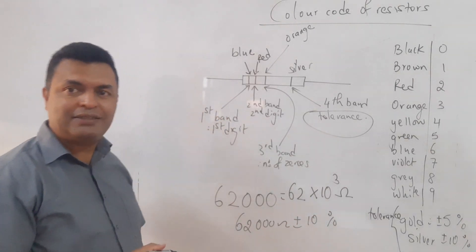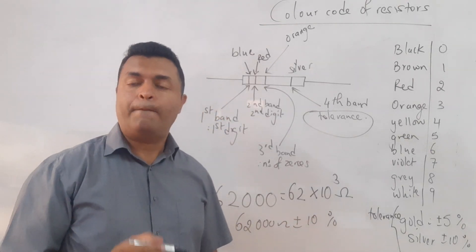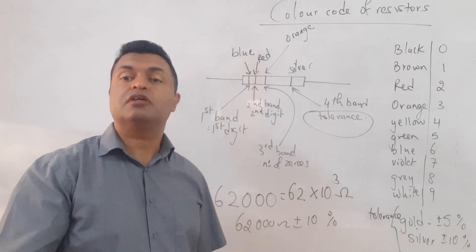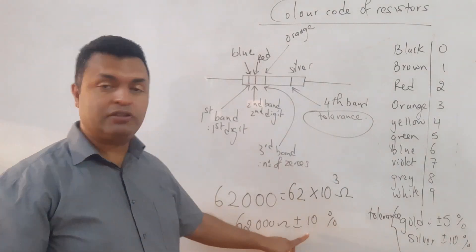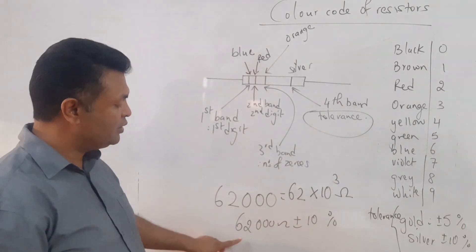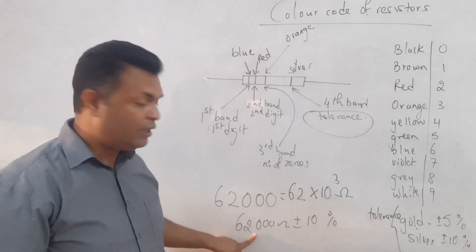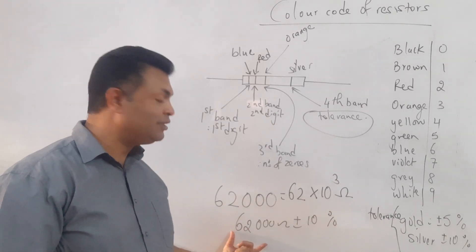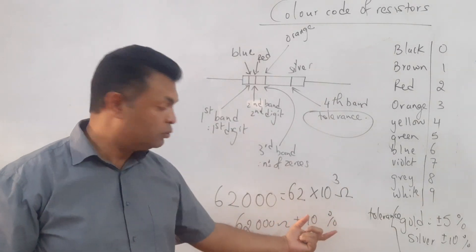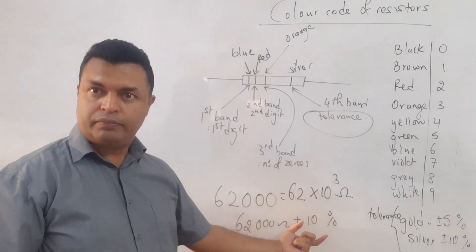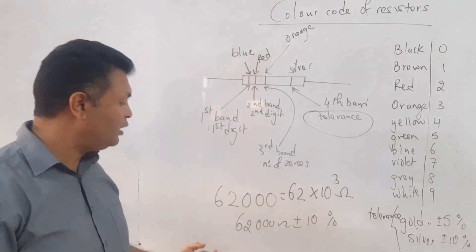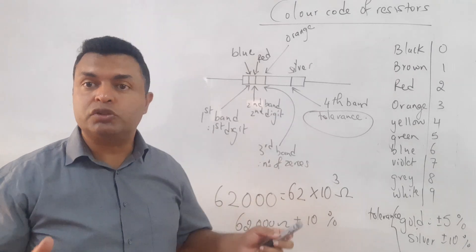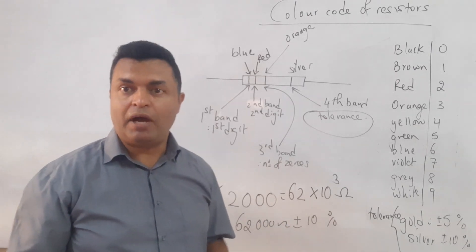The value can vary by ten percent greater or ten percent smaller. Ten percent of 62,000 is 6,200. For plus 10%, I add 6,200 to get 68,200 ohms; for minus 10%, I subtract 6,200 to get 55,800 ohms. This gives the full range within which the resistance can vary.